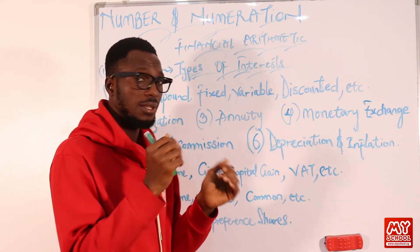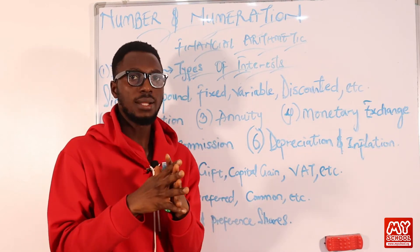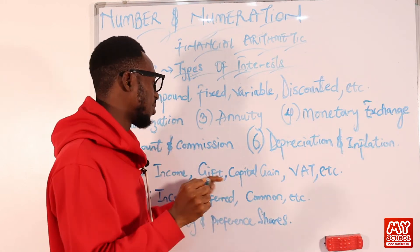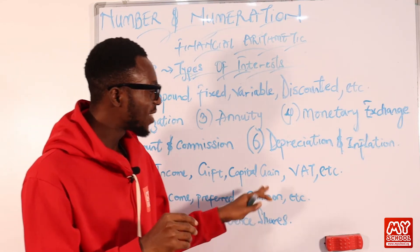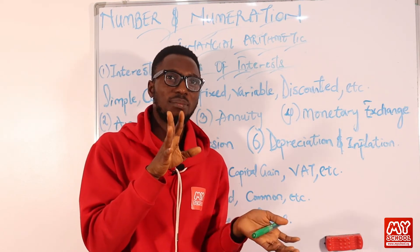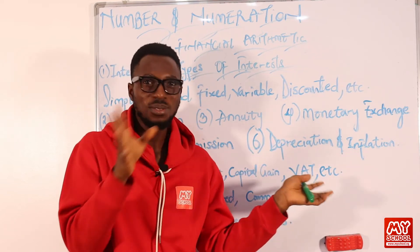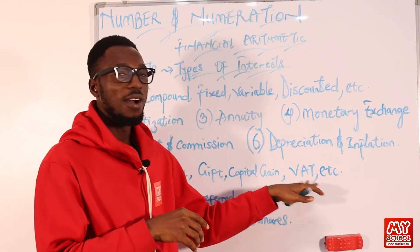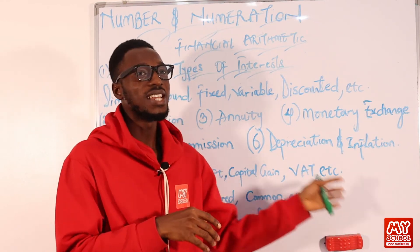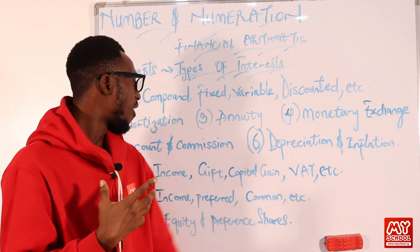Then we have gift tax — for instance, in the UK, if you want to give out certain amounts of money, depending on the conditions (there are exceptions), there will be taxation on it. Then we have capital gain tax, which is regarding profits you make from selling assets like stocks, bonds, and real estate or property. Then we have VAT — value-added tax — on goods and services. Most of the time, it is the consumer who actually bears the burden of these taxes.